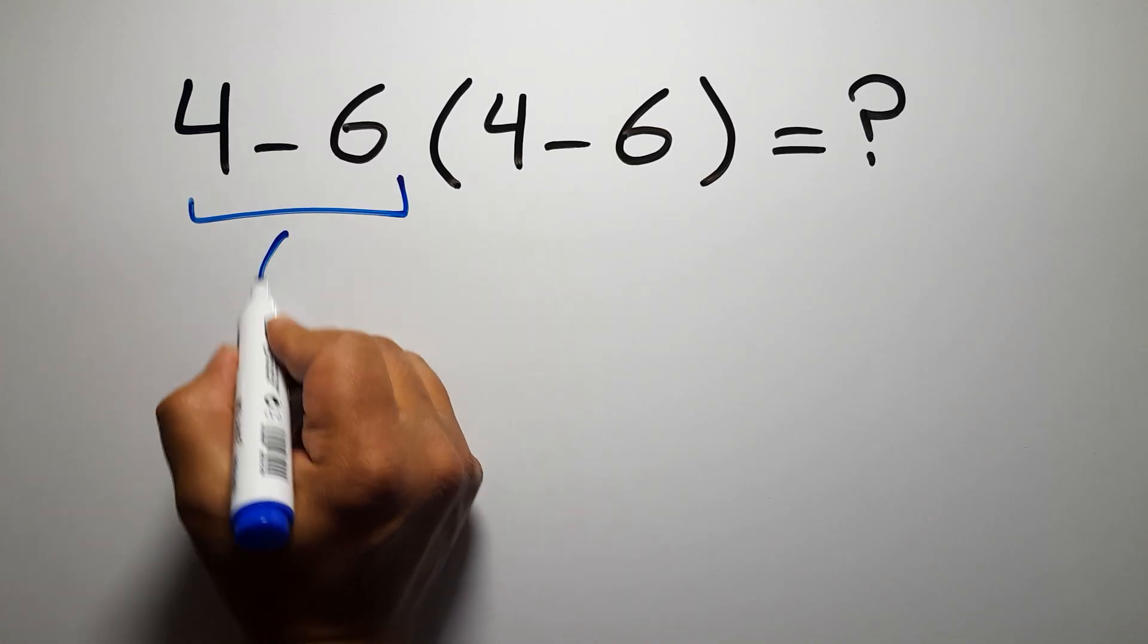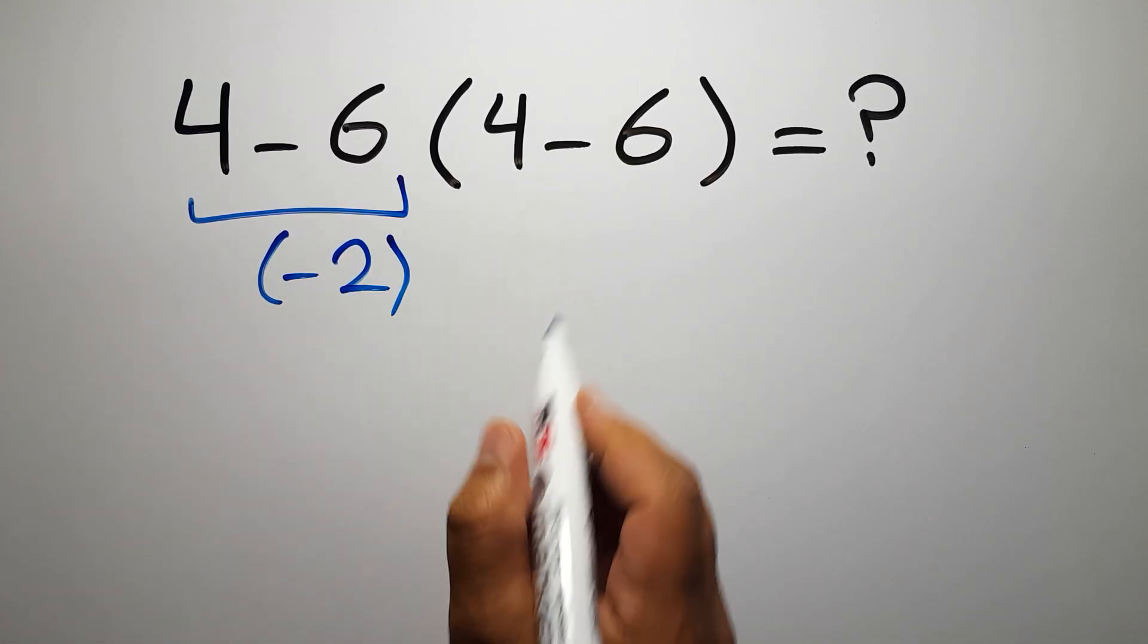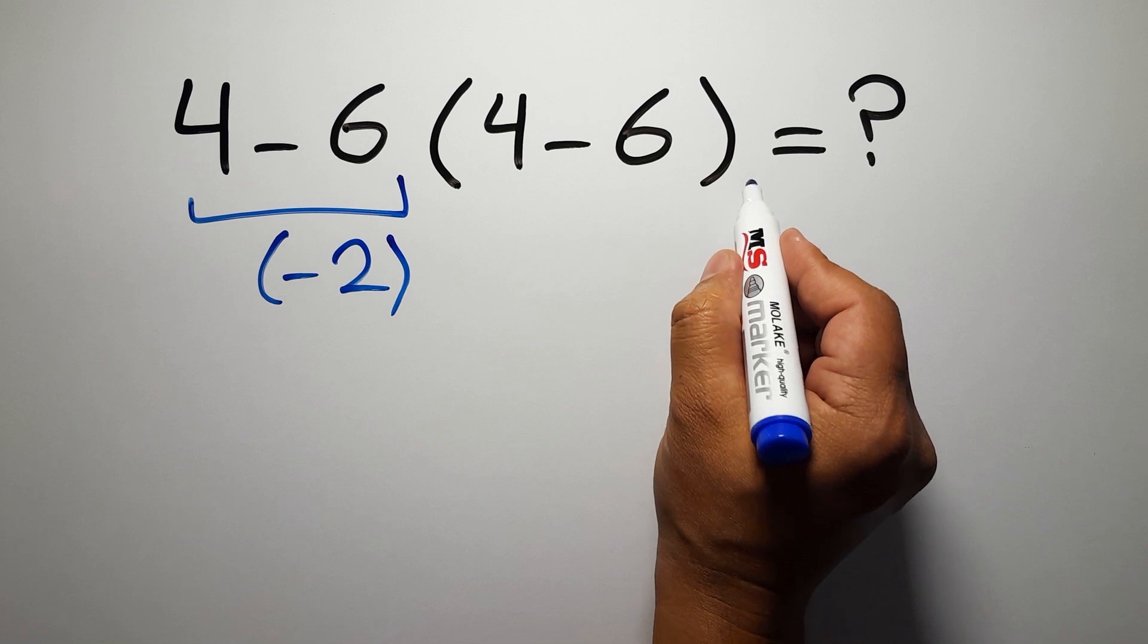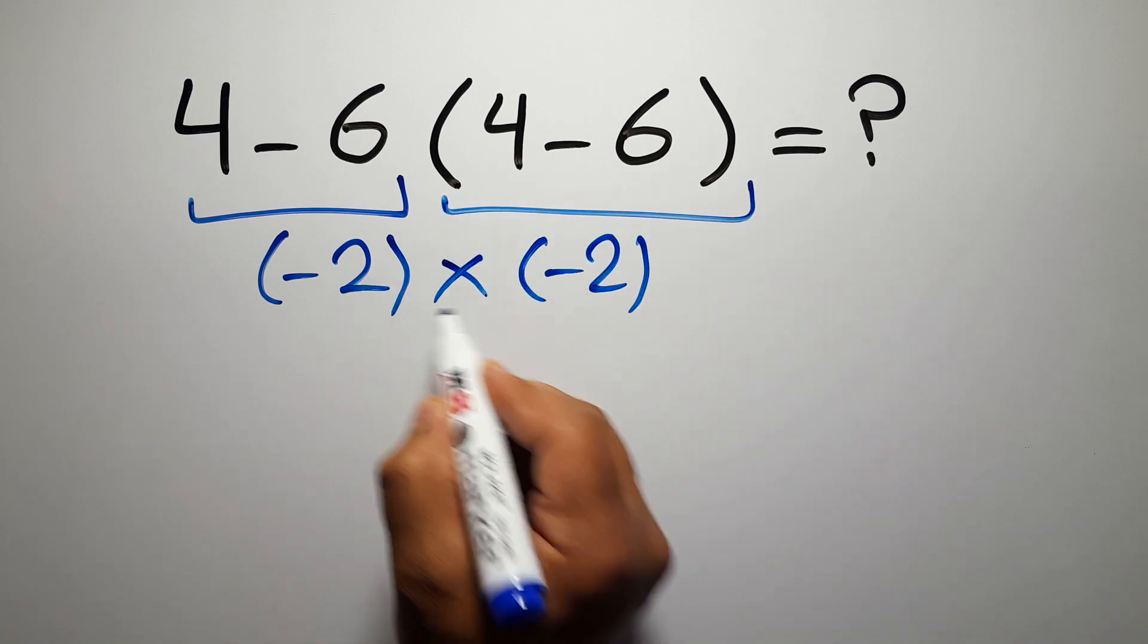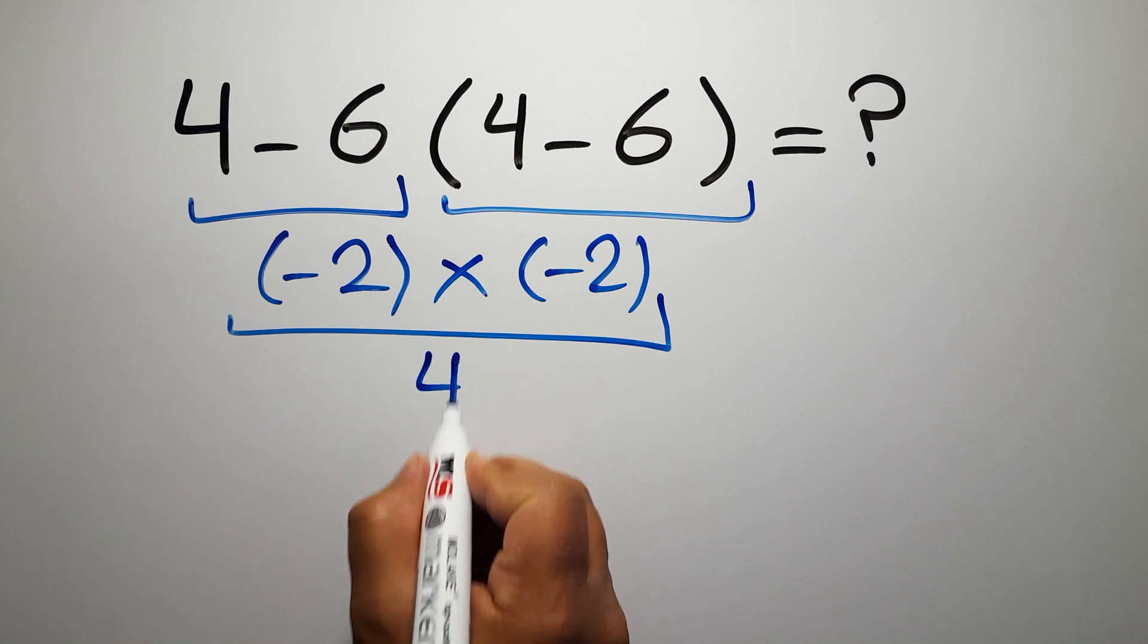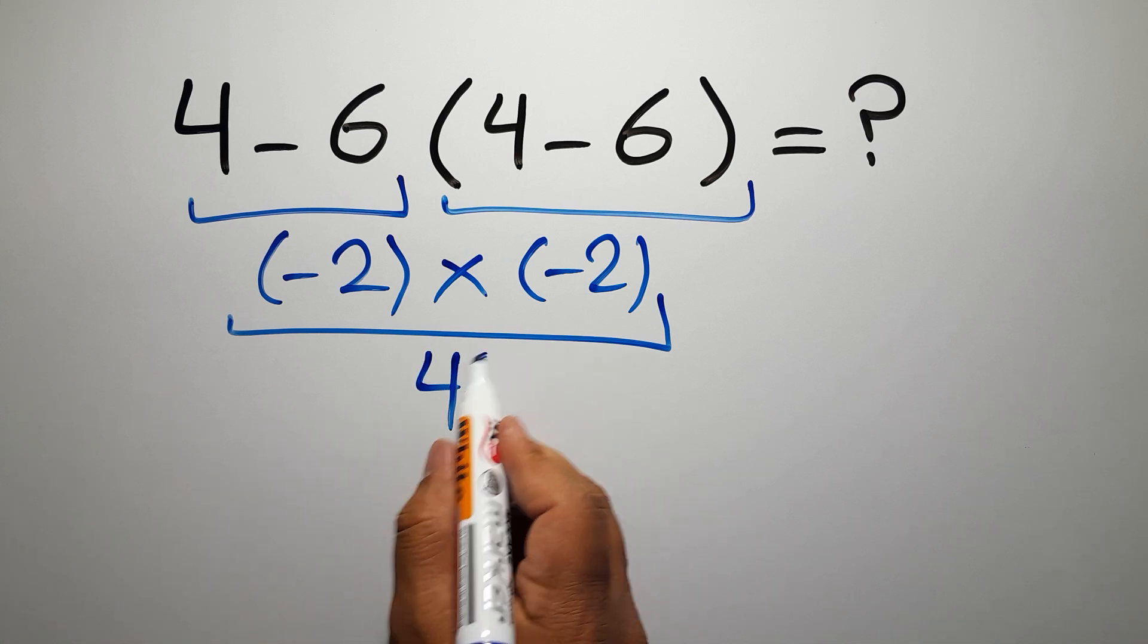4 minus 6 gives us negative 2, and again here we have 4 minus 6, so negative 2 times negative 2 equals 4, but this answer is not correct.